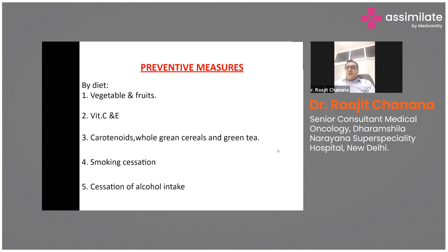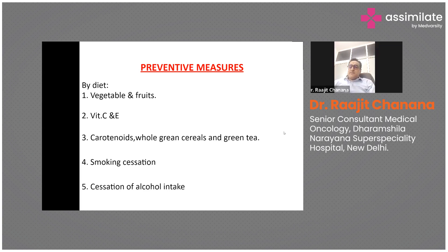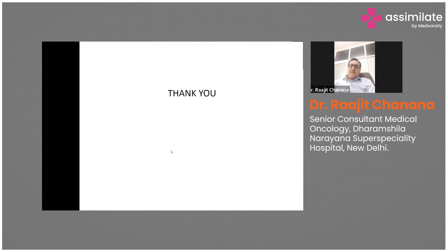The standard Indian diet - dal, khichdi, roti, sabji - is good enough, containing fiber, essential vitamins, minerals, and antioxidants. Fresh fruits and vegetables, vitamin C and E found in carrots, whole green cereals, and green tea are beneficial. Complete cessation of smoking and alcohol is essential, as alcohol is a category one carcinogen where any amount increases cancer risk, and doctors should serve as role models for patients.